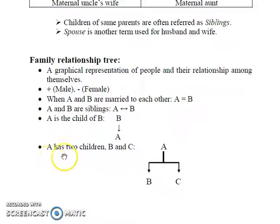So suppose A has two children, B and C. Then we can denote it in this manner here.